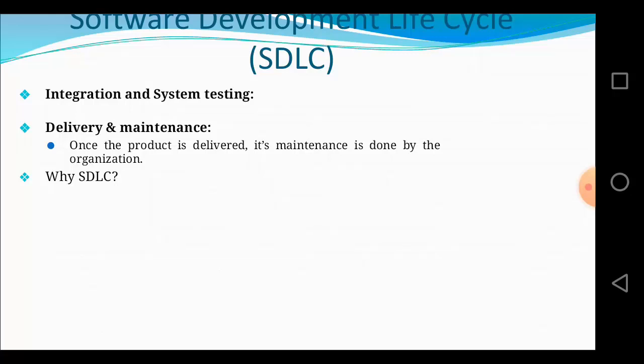Why do we perform SDLC? SDLC tells us which step to perform first, then the next step, and so on. If we break the sequence of steps, the cost will increase and the product may not be error-free. For example, we perform testing only after requirement gathering, analysis, design, and coding are complete. Following this sequence ensures you develop a consistent, efficient, and user-friendly software.